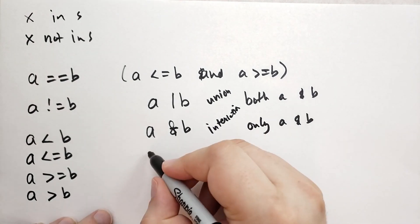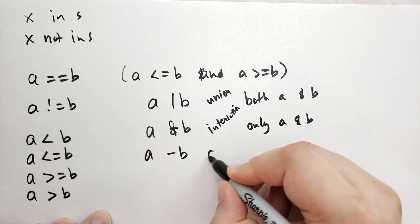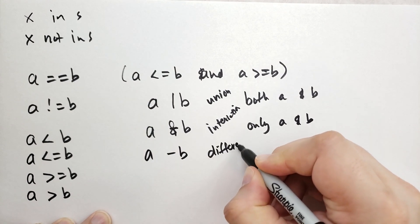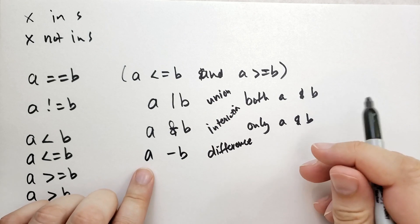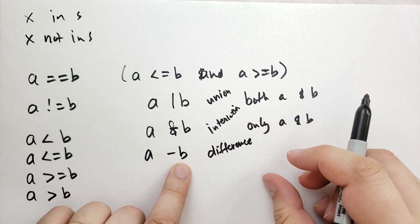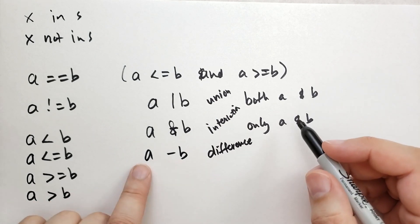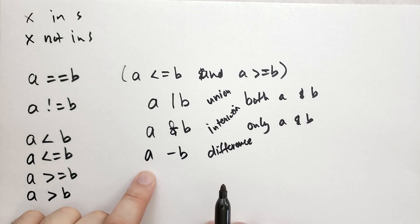Then we have a minus b. This is called difference. What this does is it takes all the elements of a and removes the elements found in b. And so you only get the elements that are special to a.